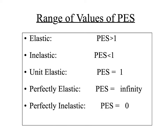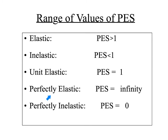Let's take a look at some ranges of price elasticity of supply. Very much like price elasticity of demand: if the number ends up where PES is greater than one, then supply is elastic in relationship to price. If it's less than one, it would be inelastic. If it equals one, it would be unit elastic. There are also two special cases: when PES equals infinity, supply is perfectly elastic; and when PES equals zero, supply is perfectly inelastic.